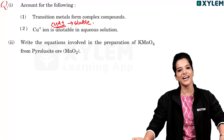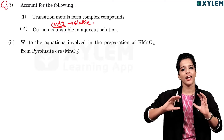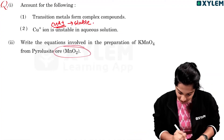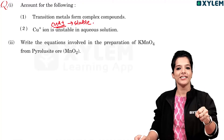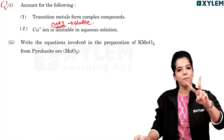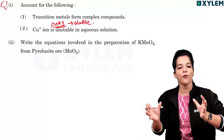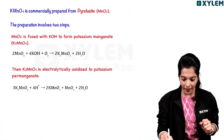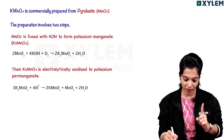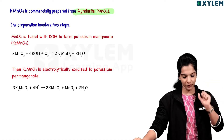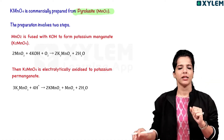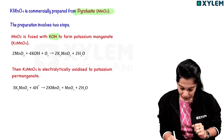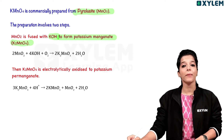Now we are going to discuss potassium permanganate preparation. KMnO4 is commercially prepared from pyrolusite, which is MnO2. The preparation involves two steps. In the first step, MnO2 is fused with KOH in the presence of oxygen and heat to form potassium manganate, K2MnO4.